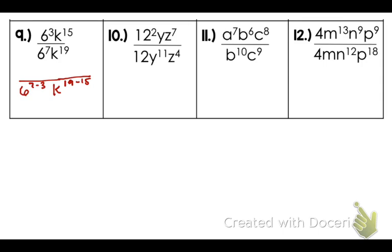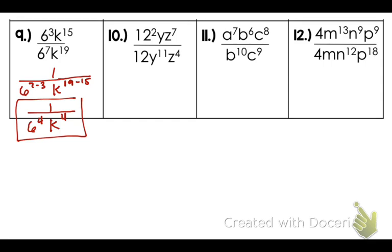There's a one at the top as your leftover coefficient, so the answer is one over six to the fourth power times k to the fourth power. I'll revisit this lesson once we do negative exponents — at that point you'll see you don't always have to decide top versus bottom; that makes these problems much easier to handle.